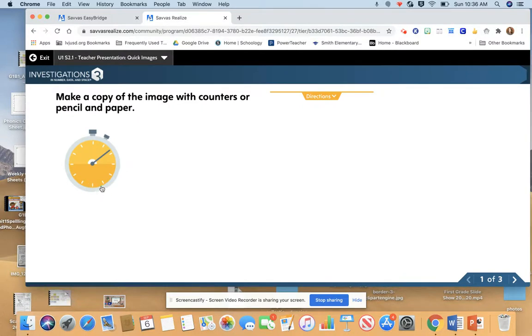I'm going to press the clock. It's going to show you some dots. I want you to draw the dots you see. Ready? Here they are. Okay, make sure to draw them. See if you can match what the card showed. Now let's check. Do you have five dots? Good job.